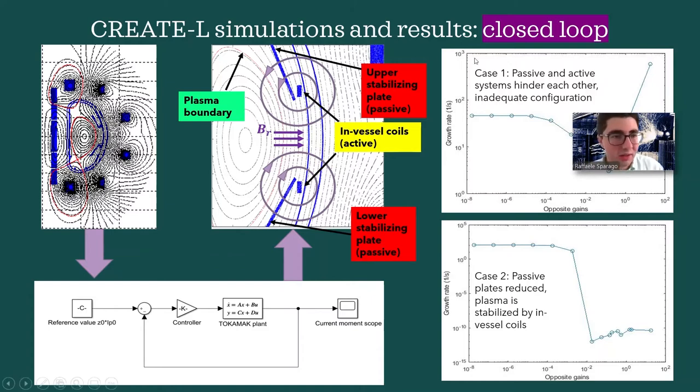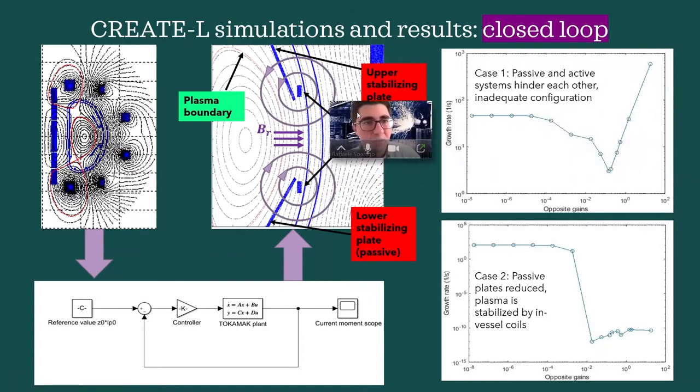Now, the effects that this radial field will exert in terms of stabilization are strongly dependent on the configuration of both active and passive systems combined. In the first case, the systems are hindering each other because these plates are shielding the active coils too much, and so the situation actually got worse as the gains were increased. In the second case, we reduced the passive plates, allowing the active coils to intervene on the plasma with more efficiency, and so the system was stabilized.